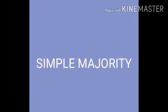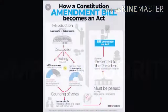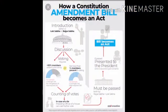The three procedures under Article 368 are: by simple majority, by special majority, and by special majority plus ratification from states. Simple majority refers to 50% plus one vote. For example, if there are 124 members, then 62 plus one votes are required.